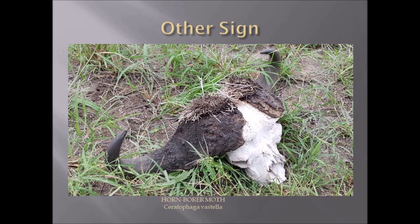Horn-borer moths — Ceratophaga vastella — have larvae that feed on the keratin of horns. It is nature's way of getting rid of even the horns of animals. Once they have finished feeding, they produce hard towers and then emerge as adult moths.